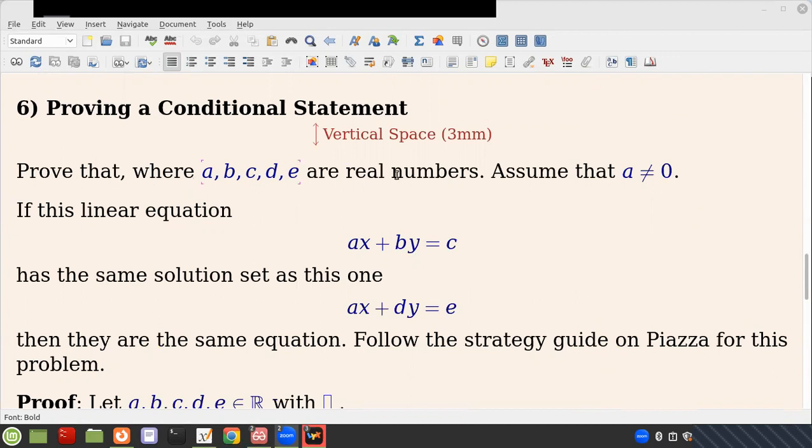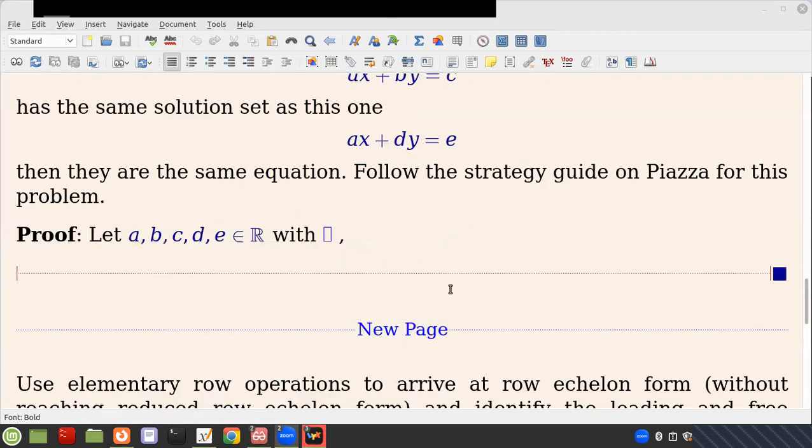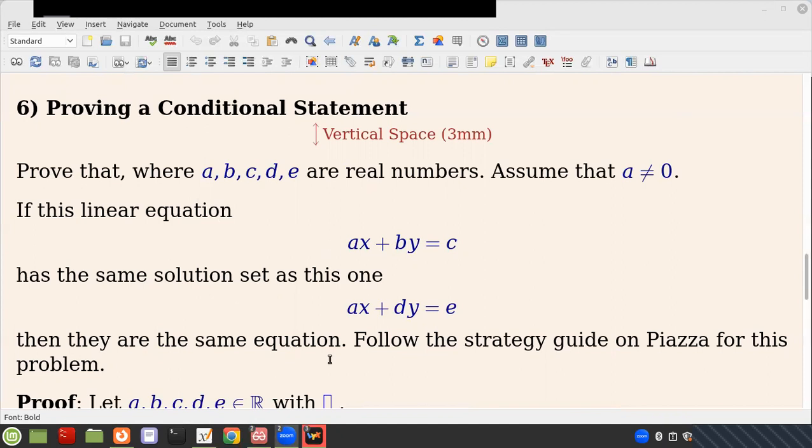Well, the language is here. I changed the syntax. It should be with A not equal to zero. If this linear equation has the same solution set as this one, then they are the same equation. Okay? It says follow the strategy guide. So the first thing is it's a conditional. You're saying if this linear system and this one have the same solution set, then they are in fact the same equation.